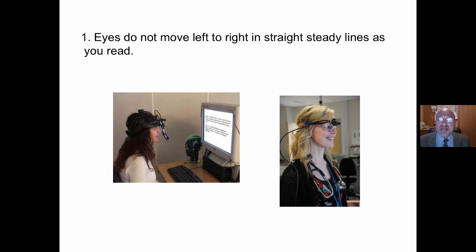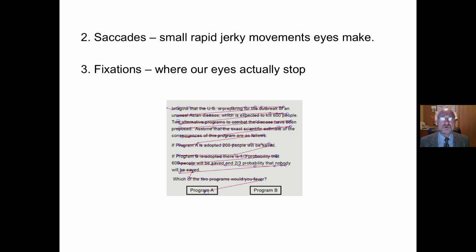Take a look at our eye movement. When we read, our eyes do not move from left to right in straight steady lines. It's more like a hummingbird. It goes back and forth. Saccades are the small, rapid, jerky movements that our eyes make.